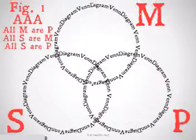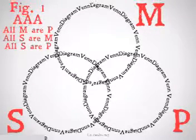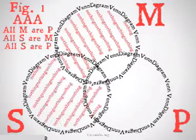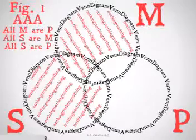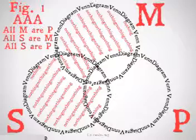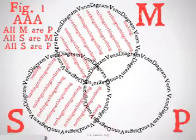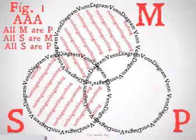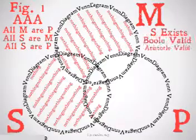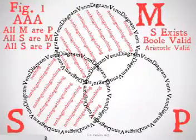The first one is Figure 1, AAA: All M are P, all S are M, therefore all S are P. We will fill it in and we will see we don't even need to take the next step for Aristotle, because this is going to be Boolean valid, and anything that's valid for Boole will be valid for Aristotle. The only place anything for S can go is in that center spot where it is going to be also a P and an M, so all S are P. It doesn't matter that S exists — this will be Boolean valid and Aristotle valid.